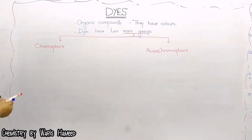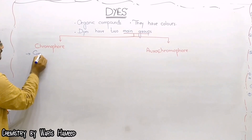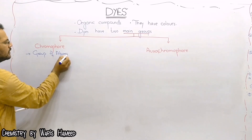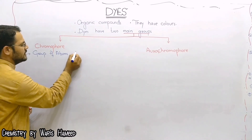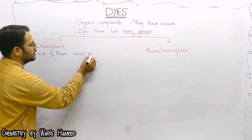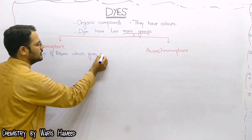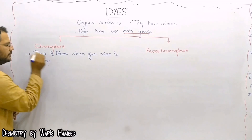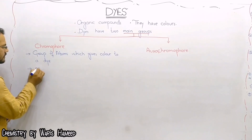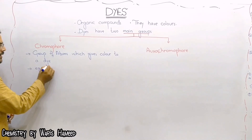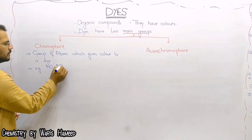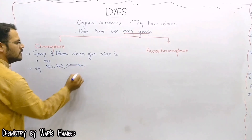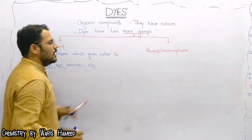Chromophore is the group — it is the group of atoms, or just a single atom — which gives color to a dye. For example, nitro and nitroso groups are examples of chromophore.